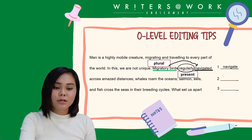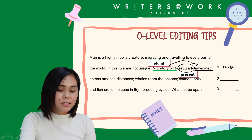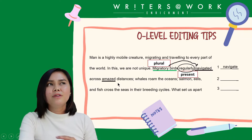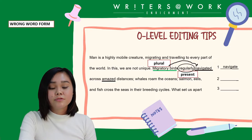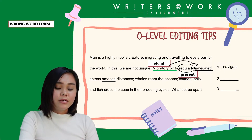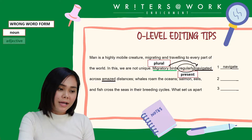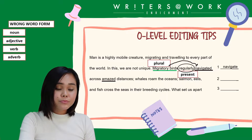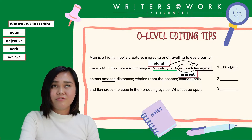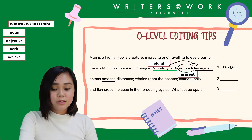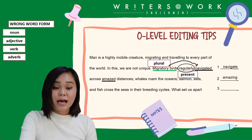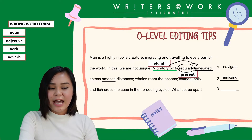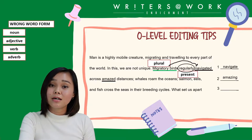Migratory birds regularly navigate across amazed distances. That doesn't sound correct because there is an error — the word 'amazed'. Now be very careful with wrong word form. This is very common in editing passages. You have to know when to convert the word into a noun, an adjective, a verb, or an adverb. For this case, 'amazed' can either be a verb or an adjective, but we need the correct adjective here, which is 'amazing', meaning causing wonder. 'Amazed' as an adjective means greatly surprised, but that's not the correct word here.